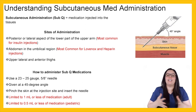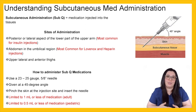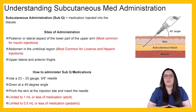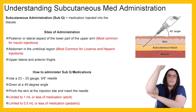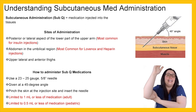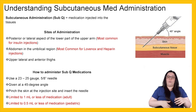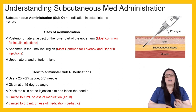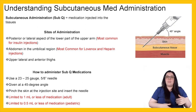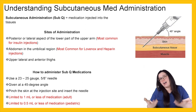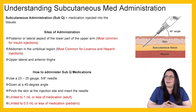Lastly, let's talk about subcutaneous administrations, also known as sub-Q. This is medication injected into the tissues. Sites of administration include the posterior or lateral aspect of the lower underarm — the most common site for insulin injections in diabetic patients — the abdomen in the umbilical region, which is most common when giving Lovenox or heparin injections, and the upper lateral and anterior thighs, which is another option but less commonly used.